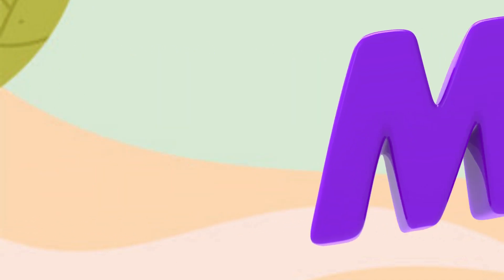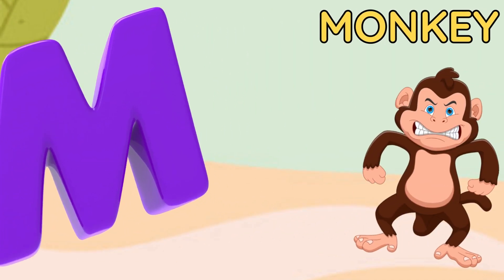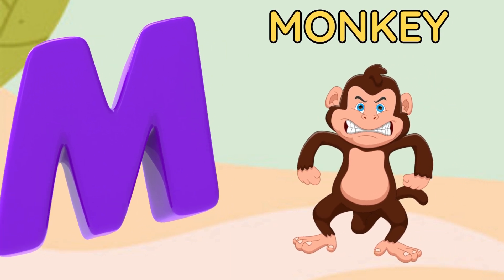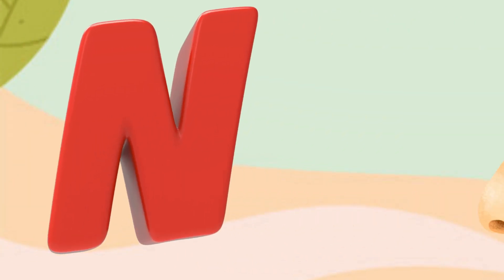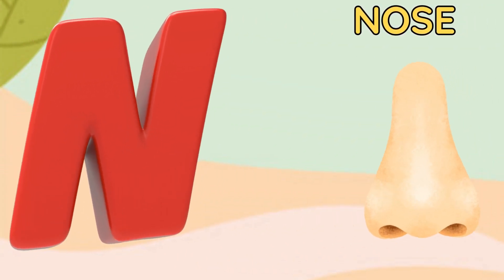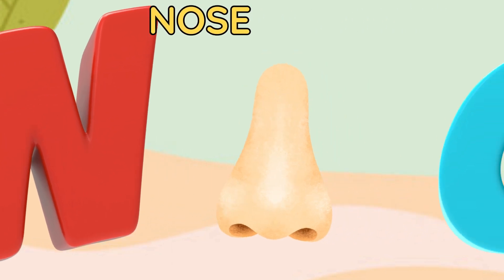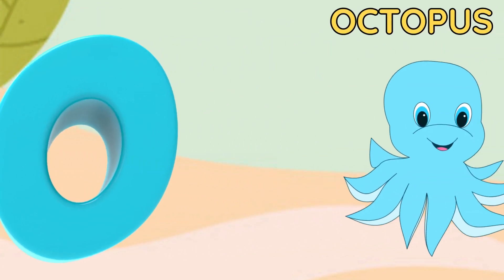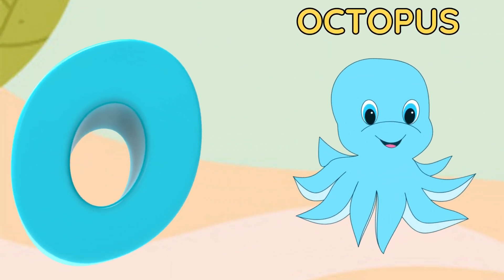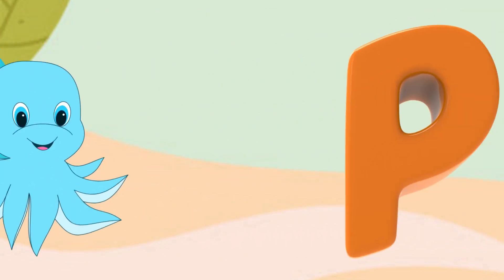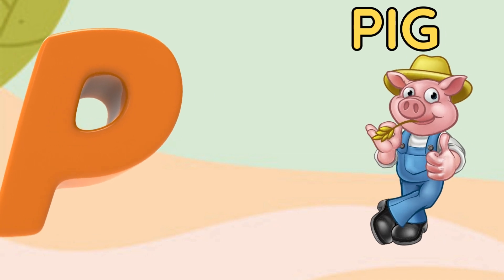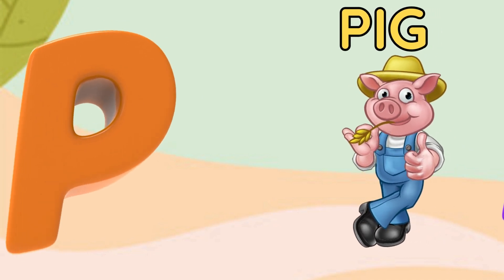M is for monkey, m-m-monkey. N is for nose, n-n-nose. O is for octopus, o-o-octopus. P is for pig, b-b-pig.